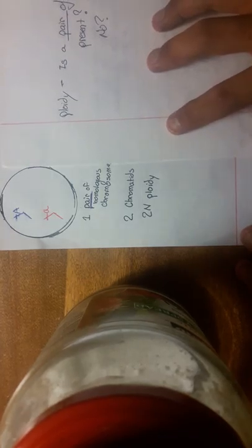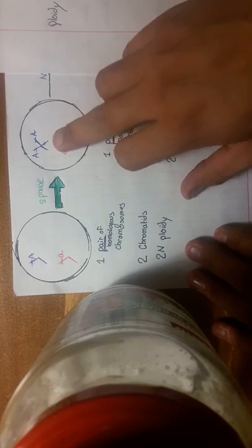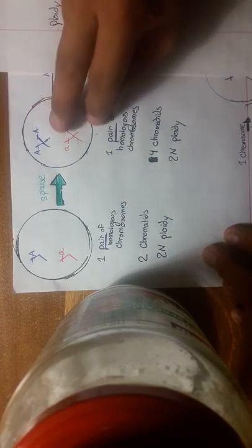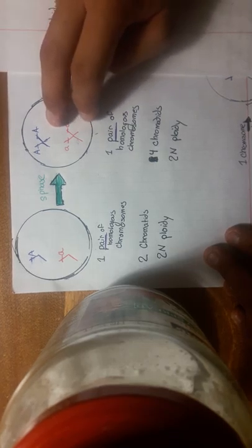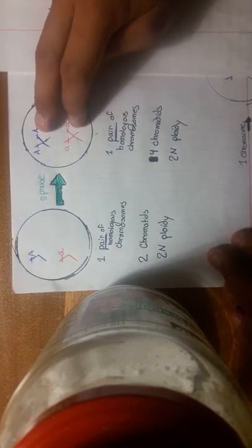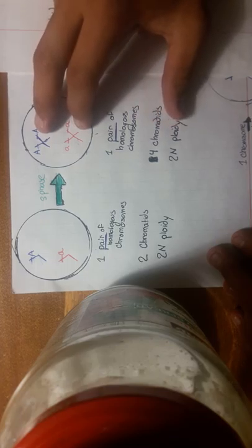So during S phase, I had talked about how the number of chromatids doubles, but the number of chromosomes does not. And the ploidy does not change during S phase. So you see S phase here. And what copied is that number of chromatids. Chromosomes is still the same. You still have one pair of homologous chromosomes, so that's two chromosomes. The ploidy is the same, but the chromatids have doubled in S phase.